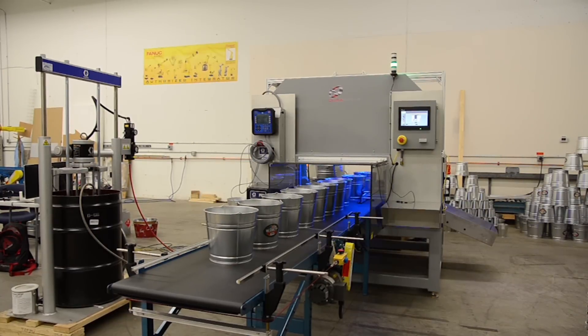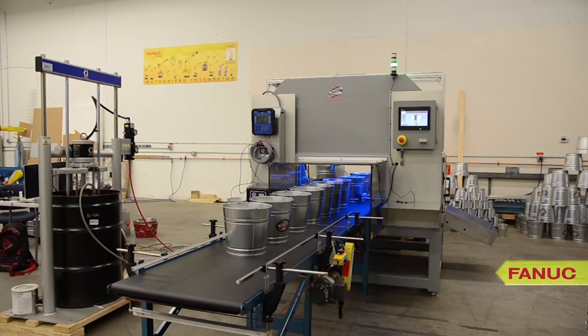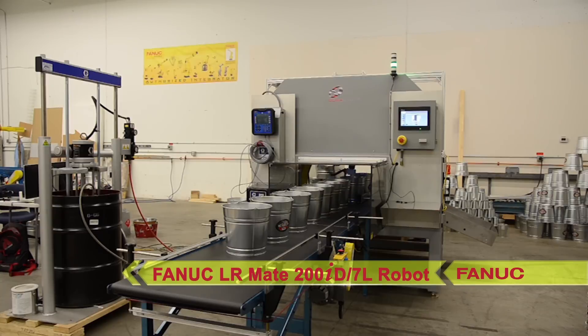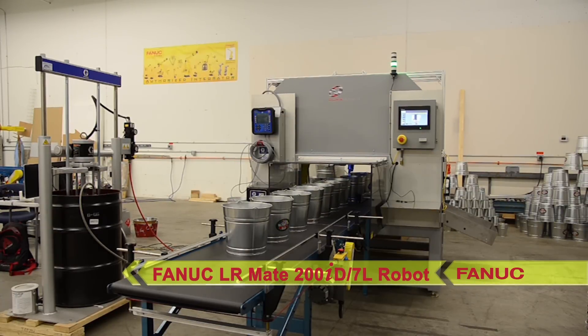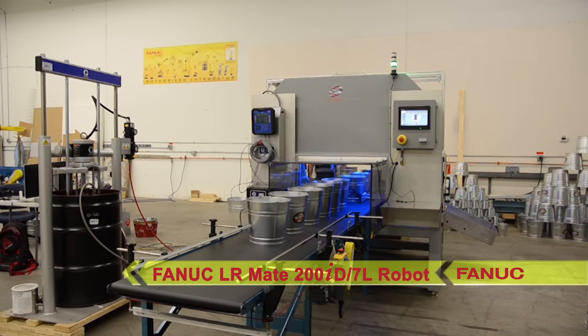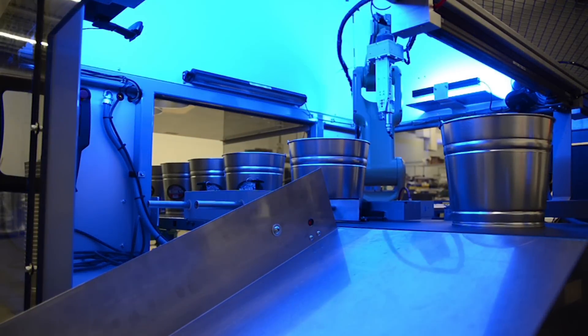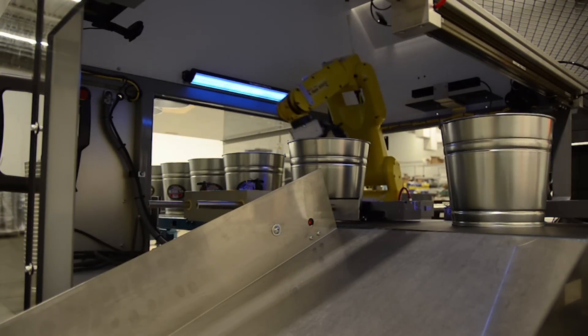To do this, Durabotics system utilizes FANUC's 6-axis LR Mate 200iD/7L long arm robot, the all-around perfect choice for nearly any job that requires an ultra-fast and flexible robotic solution.